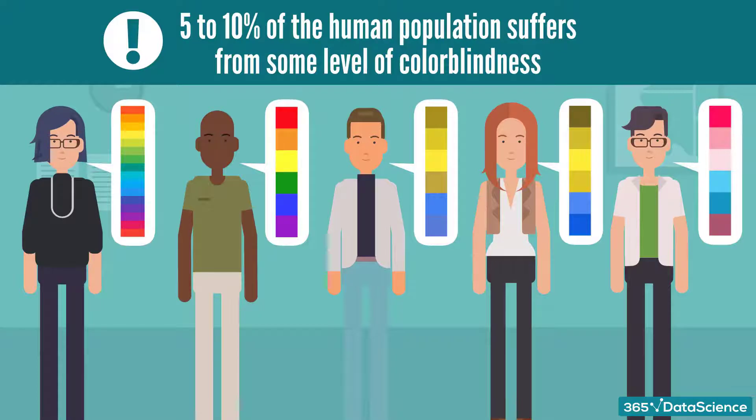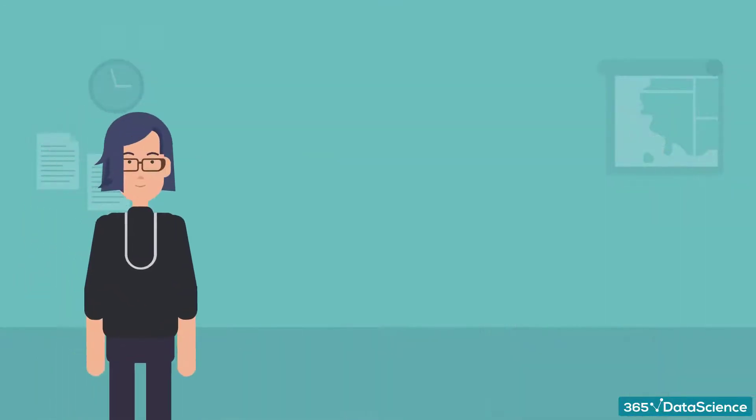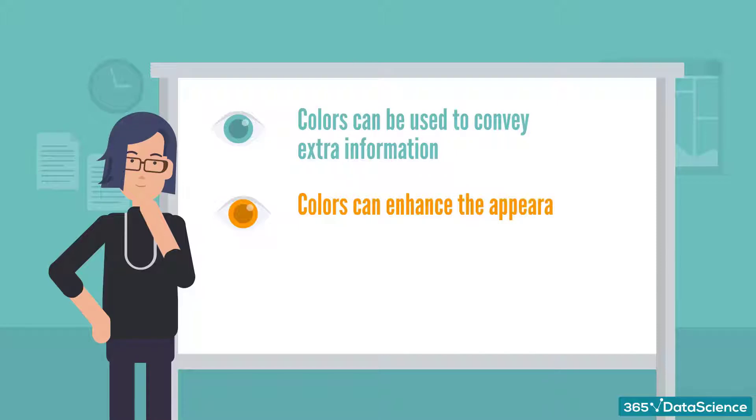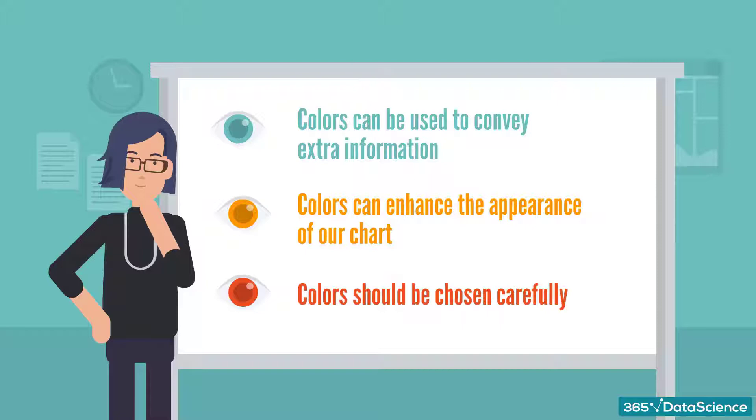With this new information, there are three important aspects we'd like to emphasize in this lecture. First, colors could be used to emphasize part of the information or even convey extra information. Second, colors can be used to enhance the appearance of our chart. Third, colors should be chosen carefully.